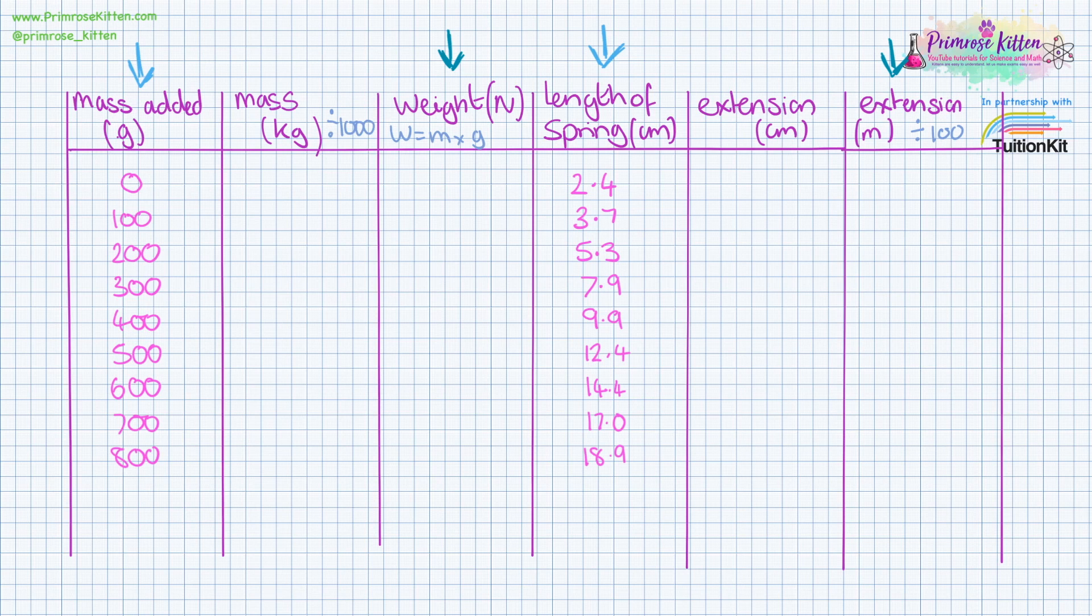I now need to turn my mass added in grams into mass in kilograms and we do that by dividing by a thousand. So I now have 0.1, 0.2, 0.3, 0.4, 0.5, 0.6, 0.7 and 0.8 kilograms that were added.